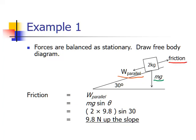Since the object is not moving, the friction and the component of weight down the slope, W parallel, must be balanced. Therefore, the friction is equal to mg sine theta. So 2 times 9.8 times the sine of 30, which means that the friction is 9.8 newtons up the slope.